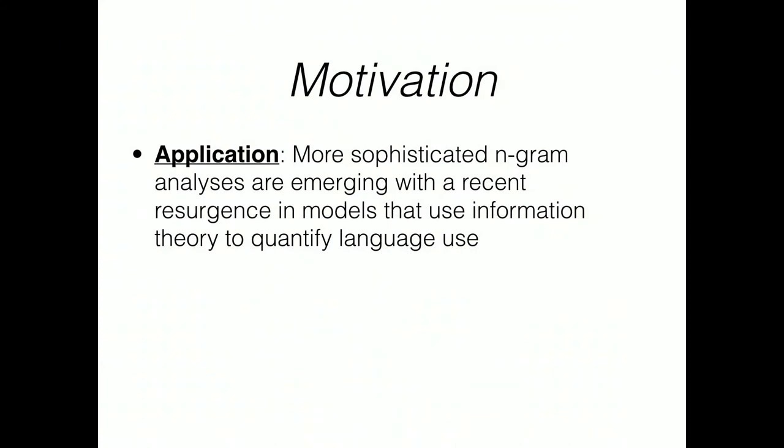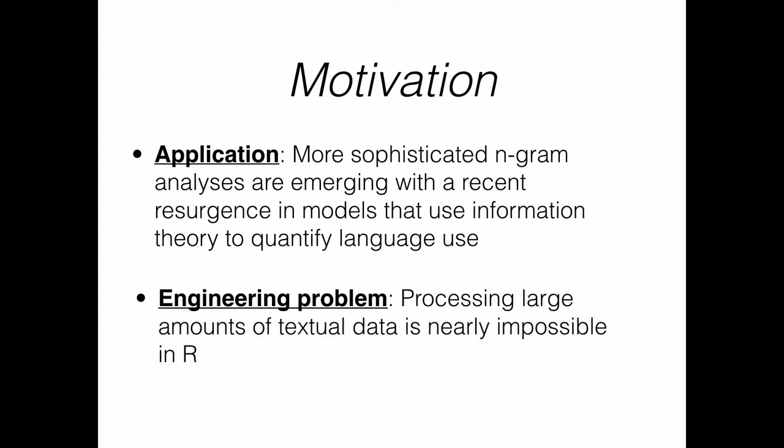The motivation has an application component: more sophisticated n-gram analyses are emerging, along with a recent resurgence in models that use information theory to quantify language use. Information theory is a frequency-based model that looks at the statistical nature of a corpus. There's also an engineering problem — processing large amounts of text data in R is nearly impossible. People essentially hate R for data munging; they'll clean data in Python and then move it to R after it's cleaned, to run statistical models.